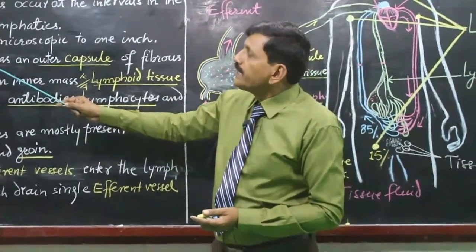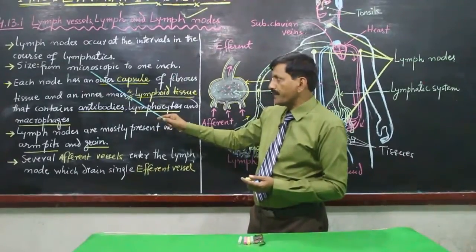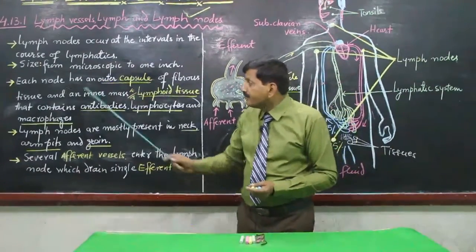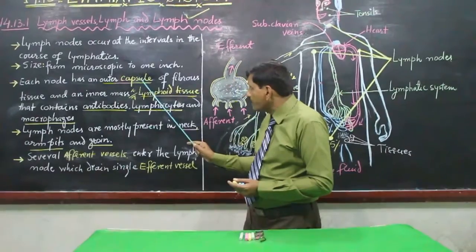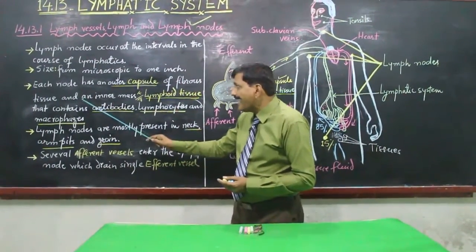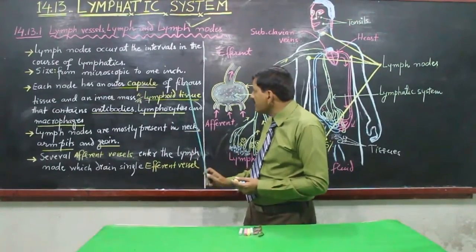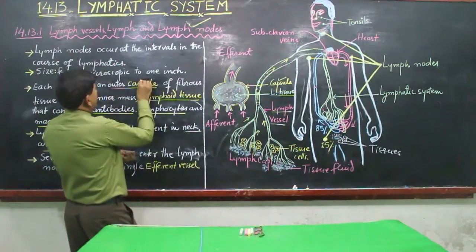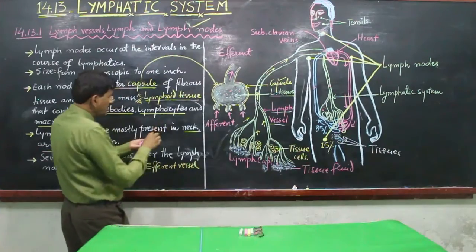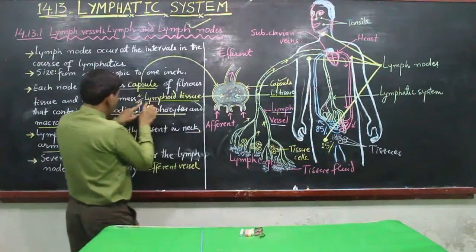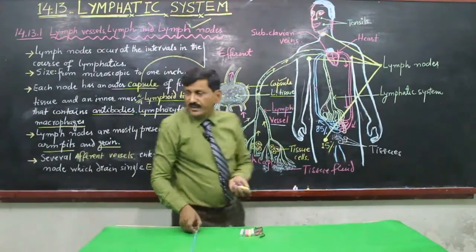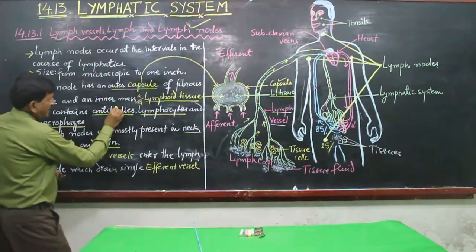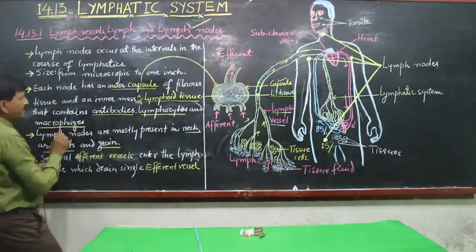Each node has an outer capsule of fibrous tissue and an inner mass known as lymphoid tissue. This lymphoid tissue contains antibodies, lymphocytes, and macrophages.